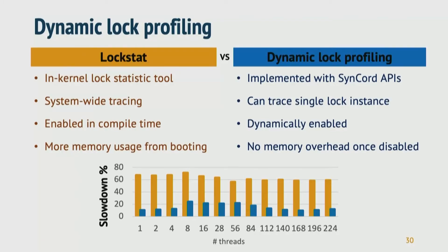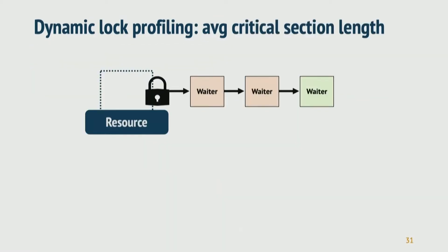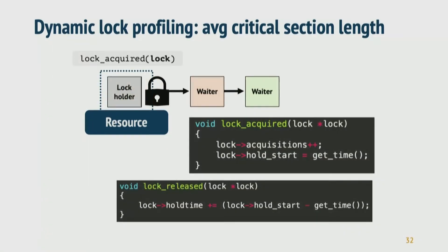Here's the graph showing the slowdown between lock stat and dynamic lock profiling. Since lock stat traces every lock in the kernel and collects 10 kinds of statistics, it constantly incurs 60% application slowdown. On the other hand, dynamic lock profiling with Synchrod shows much lower slowdown because it can trace only a single lock instance and collect specific statistics.